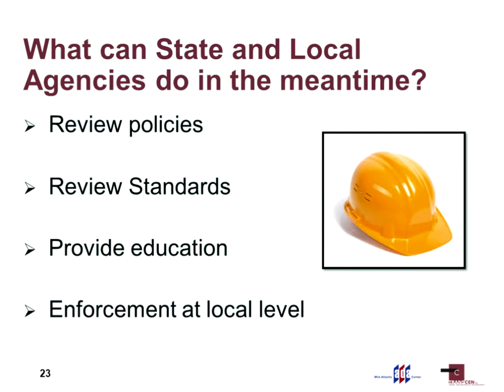So what can state and local agencies do in the meantime? You have to review your policies and provide accessible facilities. Review your policies to make sure how you're serving your population reflects accessibility — people can get into your buildings, use your sidewalks, and you have accessible signals where needed. Also review your standards: take a look at your standard drawings and details to see if they reflect accessible design. Have policies set up so you know what to do when standards don't fit. And provide education — find out what your options are and know what you're obligated to do.